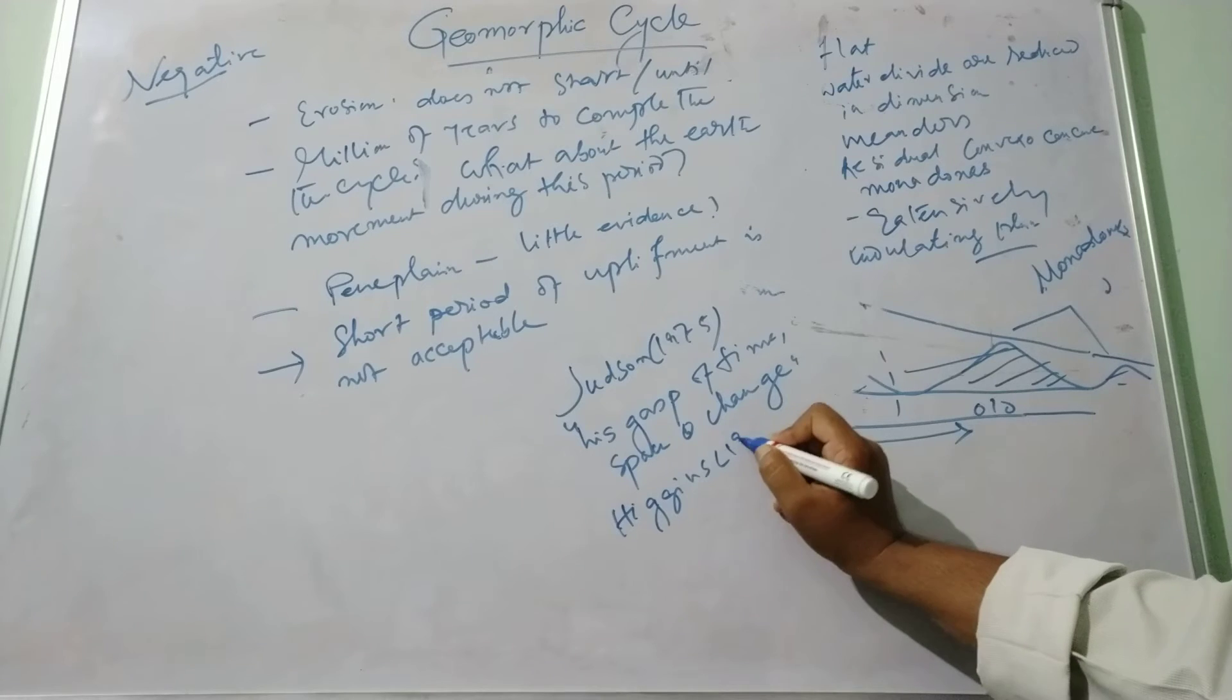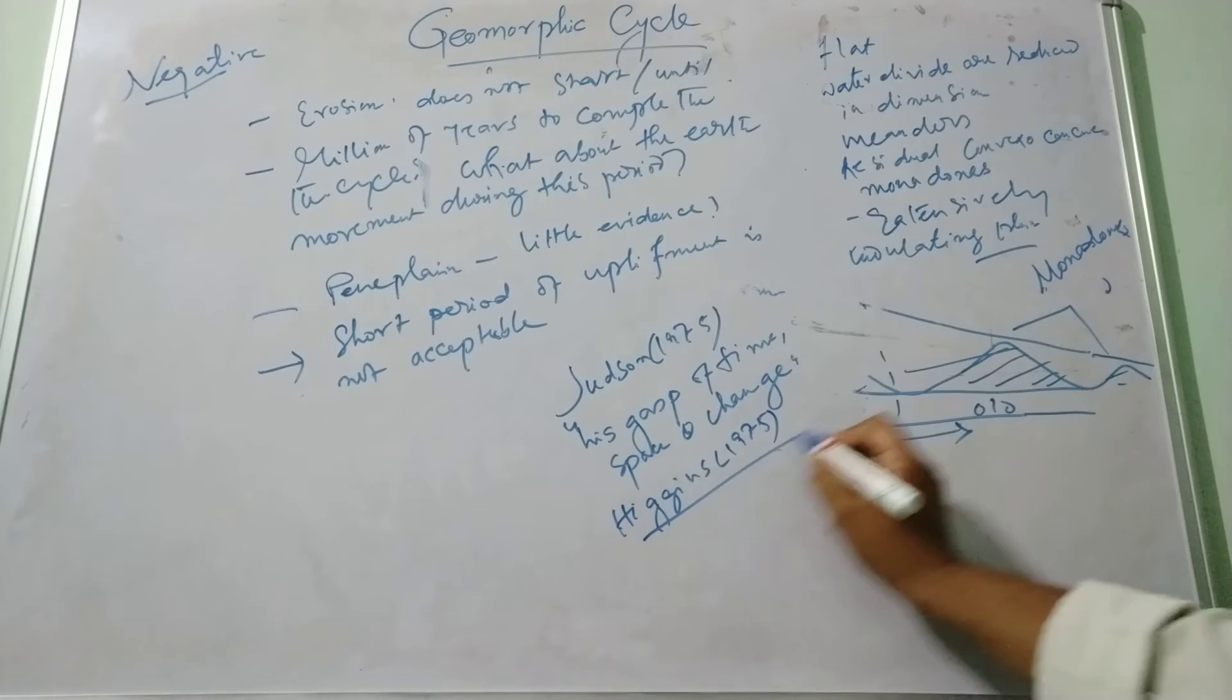Higgins in 1975 stated that Davis's system came to dominate both the teaching and research in the descriptive and the genetic historical aspect of geomorphology.